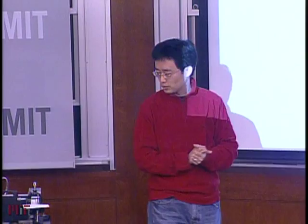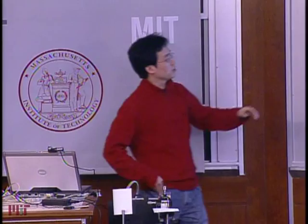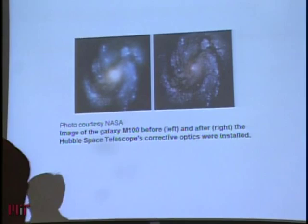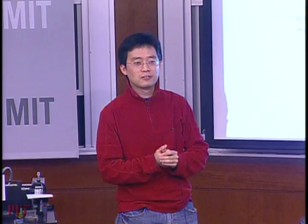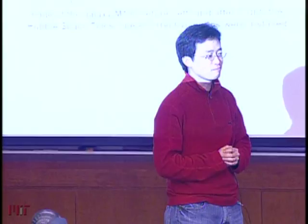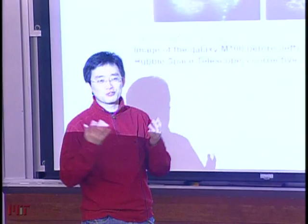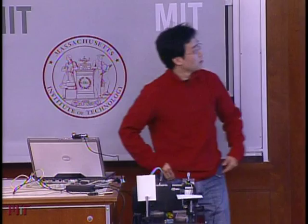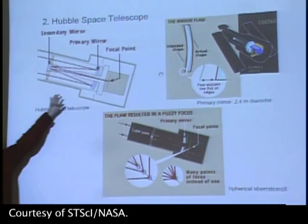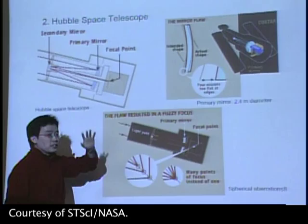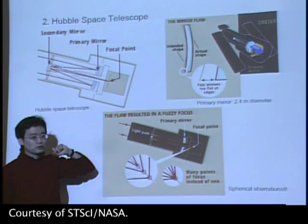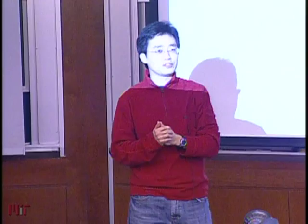The image of a galaxy looked blurred before the fix and sharp after. NASA's solution: since the telescope was already in orbit and you can't bring it back, and since all the cameras share the same focal plane, they sacrificed the cameras and inserted another mirror system that introduces the spherical aberration in the opposite fashion, cancelling it out.